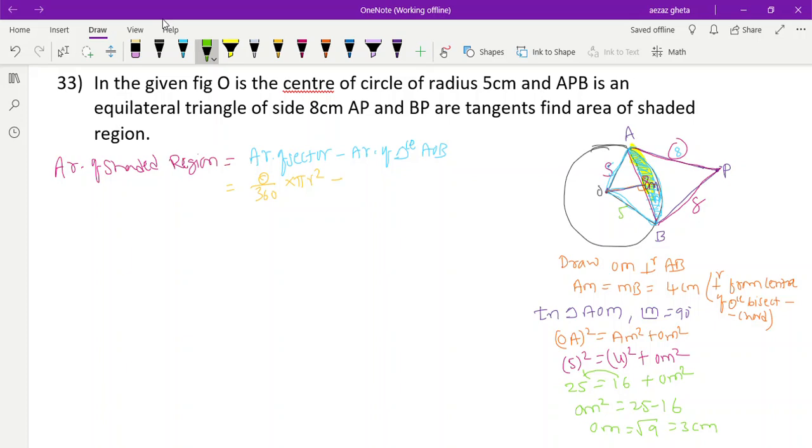Now we got OM is 3cm, so I can use half into base into height for triangle area. For theta, what is angle O? It's very simple. Angle A is 90 because radius and tangent are perpendicular. Angle P is 60 because it is equilateral triangle. So angle O should be 120. OAPB is a quadrilateral.